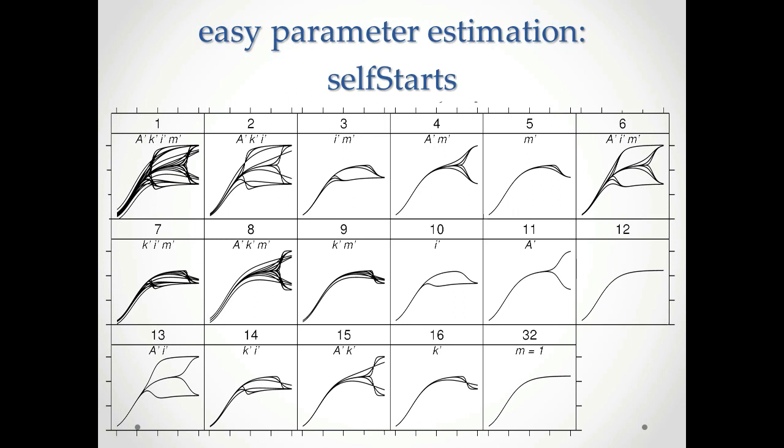So in SSPosnick Richards, the argument mod number, which in this case is shown as the strip header for each of these panels, tells the self-start function whether to estimate all parameters, such as in mod number one, or to fix up to five of the parameters to use the specified values. And this, by default, is means across the dataset.